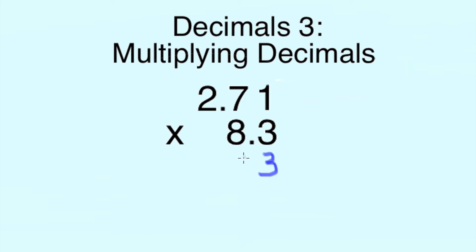So 3 times 1 is 3, 3 times 7 is 21 and we carry the 2 up here. 3 times 2 is 6, add the 2 and that's 8.